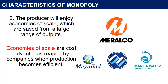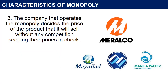10. The producer will enjoy economies of scale, which are savings from a large range of outputs. Economies of scale are cost advantages reaped by companies when production becomes efficient. Companies can achieve economies of scale by increasing production and lowering costs. The company that operates the monopoly decides the price of the product that it will sell without any competition keeping their prices in check. As a result, monopolies can raise prices.